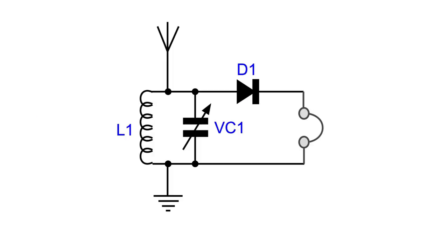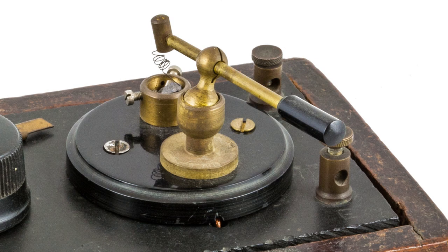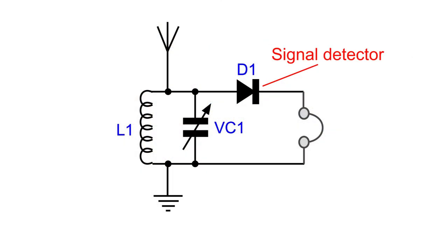The next element within the crystal radio is the detector. Early crystal radios used a crystal of material onto which a small wire was placed and hence the names crystal radio and also cat's whisker. Today we use a semiconductor diode.